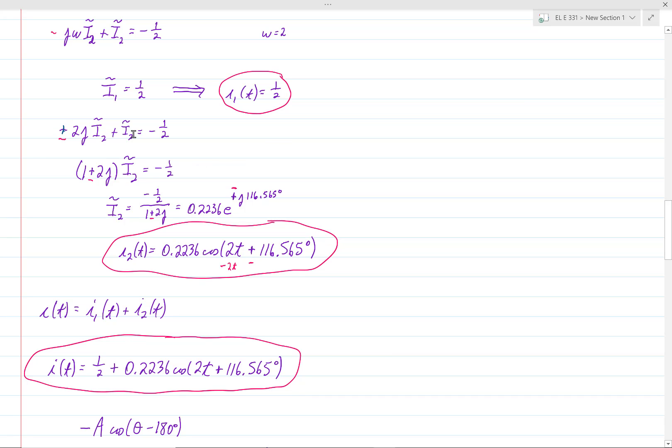So then when you group together everything on the left-hand side, instead of 1 plus 2j times i2 tilde, you would get 1 minus 2j times i2 tilde. And so when you then solve for i2 tilde, you would get minus 1 half over 1 minus 2j instead of 1 plus 2j. And therefore,